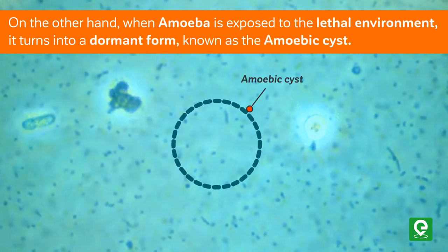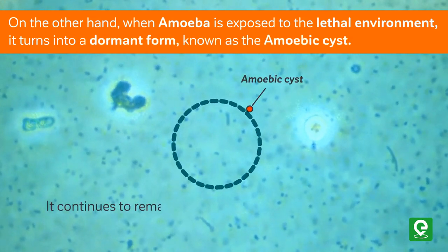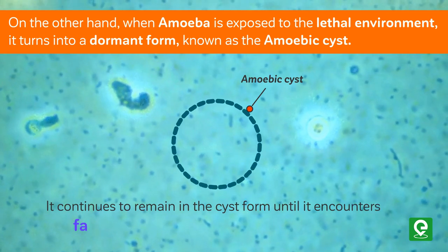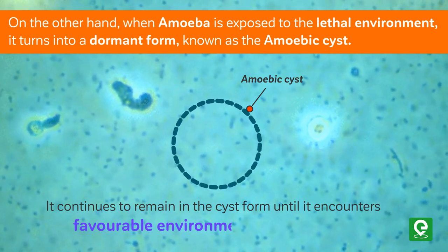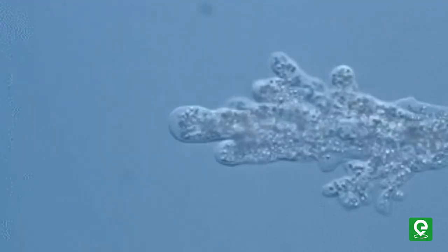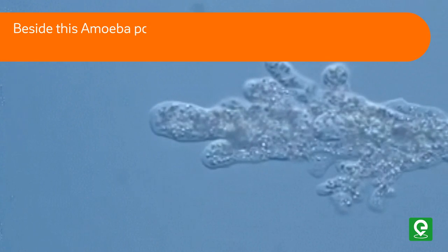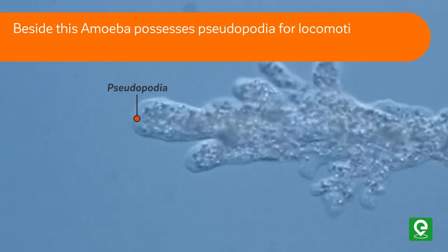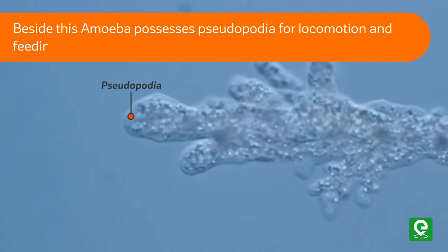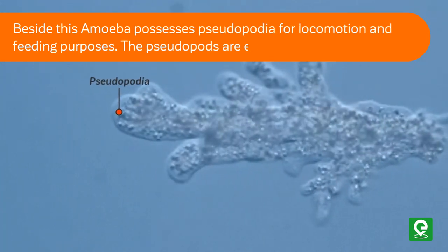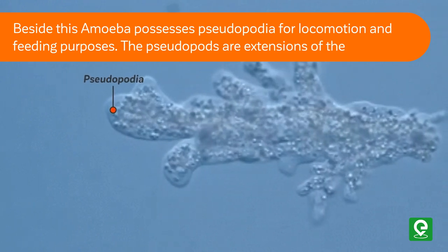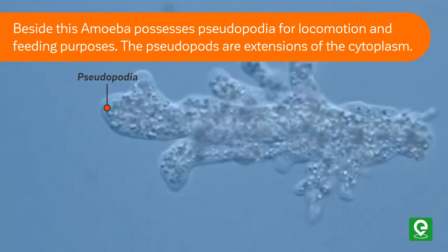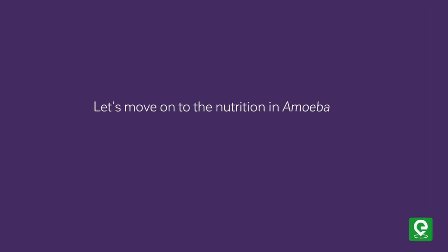When amoeba is exposed to a lethal environment, it turns into a dormant form known as the amoebic cyst, and continues to remain in this cyst form until it encounters favorable environmental conditions. Besides this, amoeba possesses pseudopodia for locomotion and feeding purposes. The pseudopods are extensions of the cytoplasm.